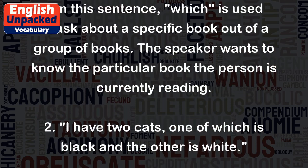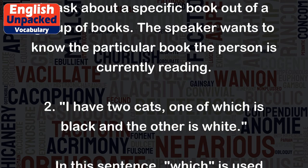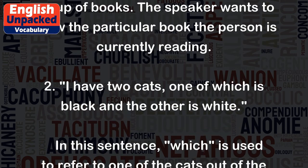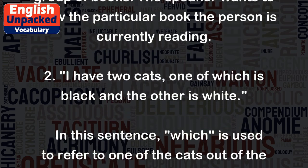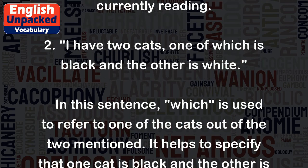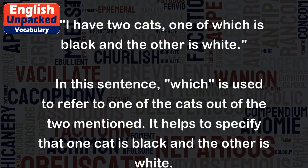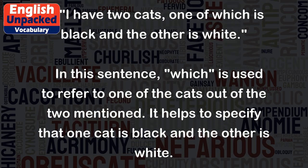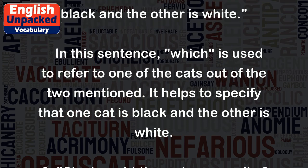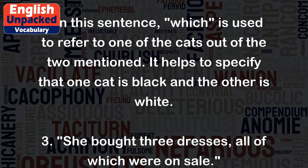Two: I have two cats, one of which is black and the other is white. In this sentence, WHICH is used to refer to one of the cats out of the two mentioned. It helps to specify that one cat is black and the other is white.